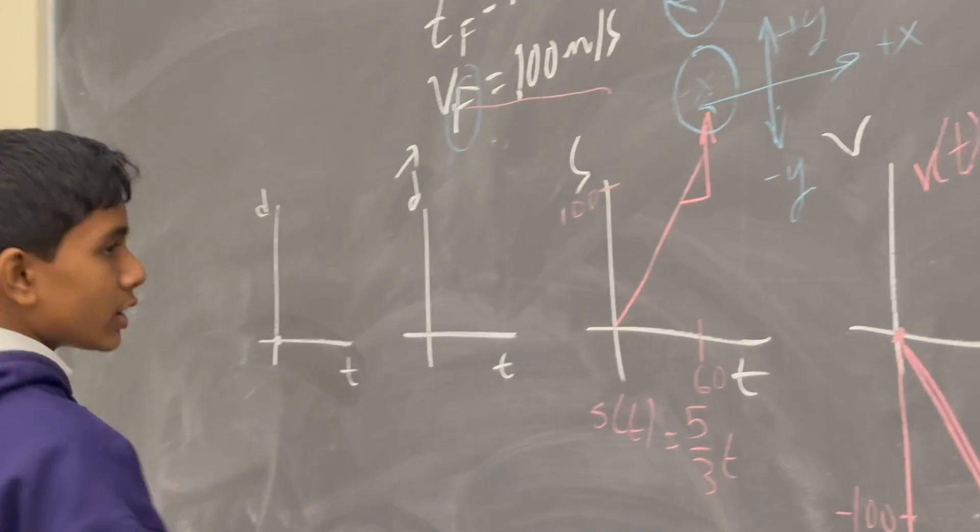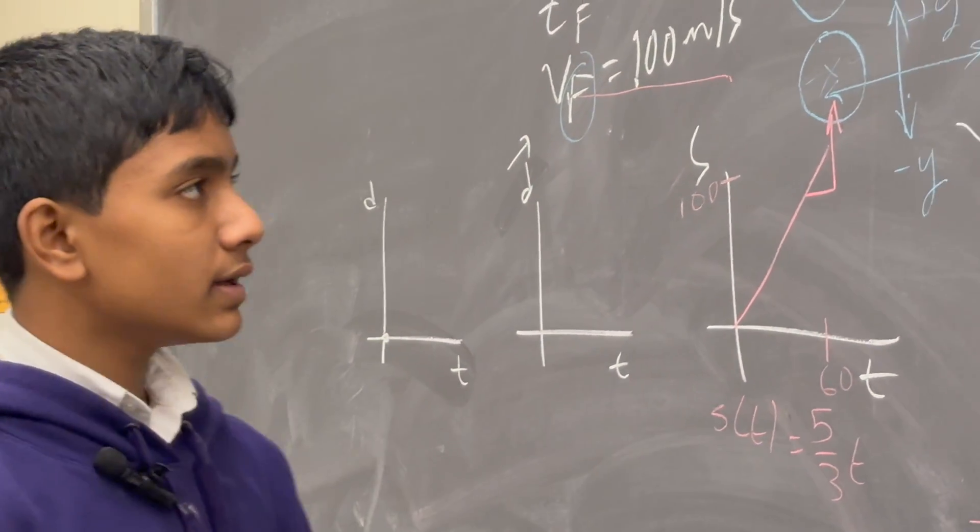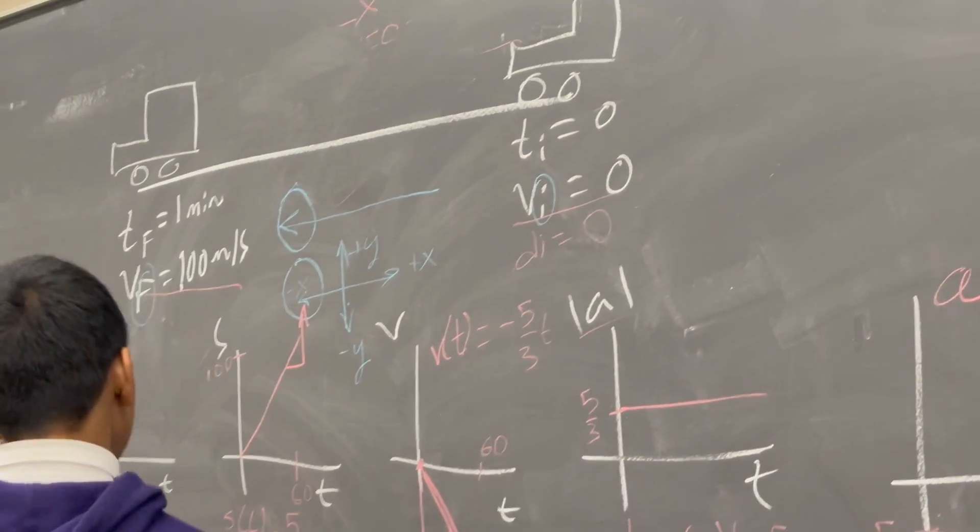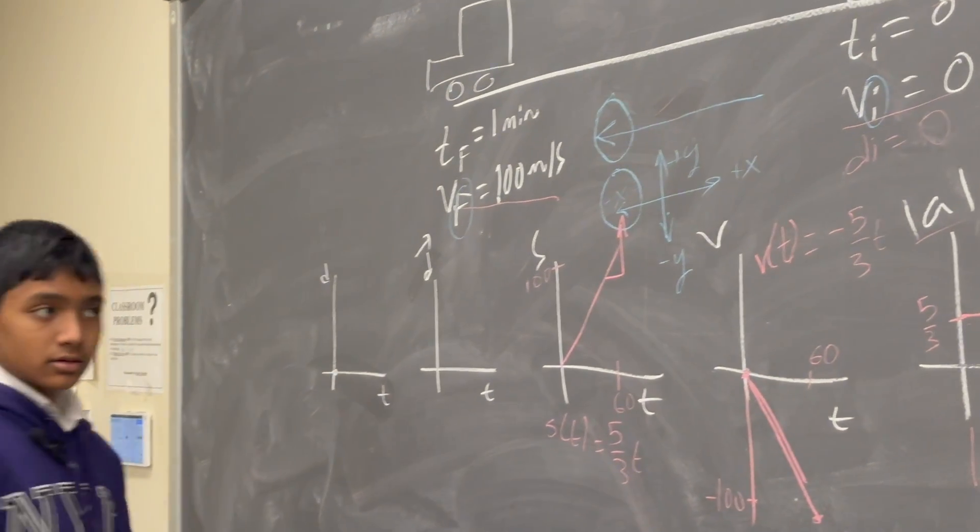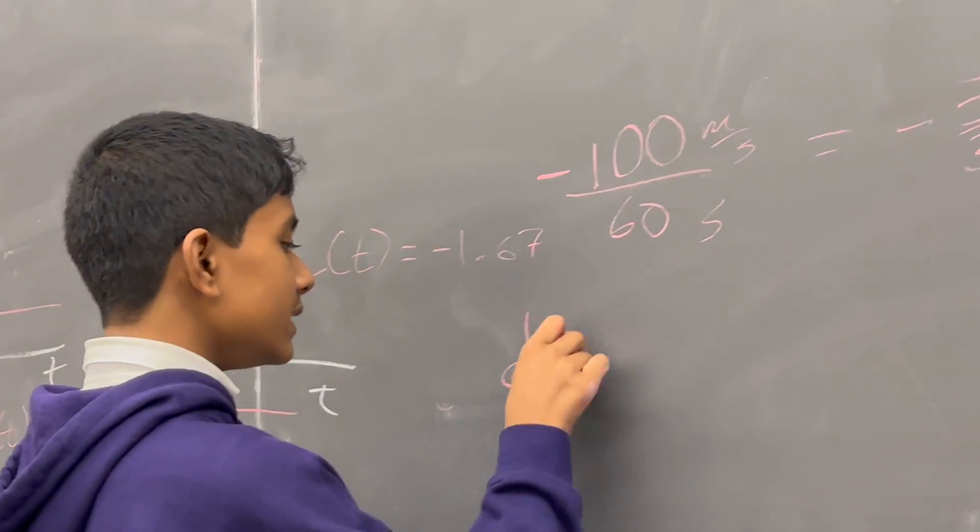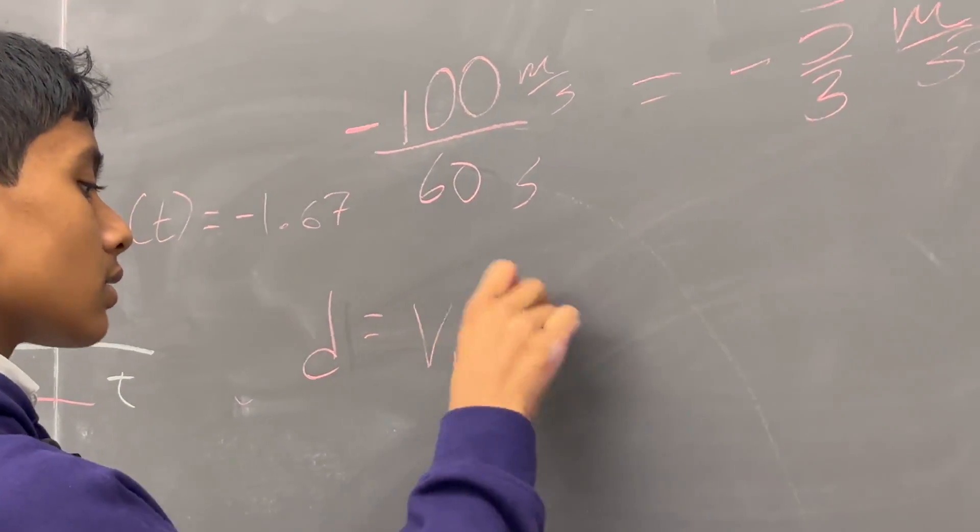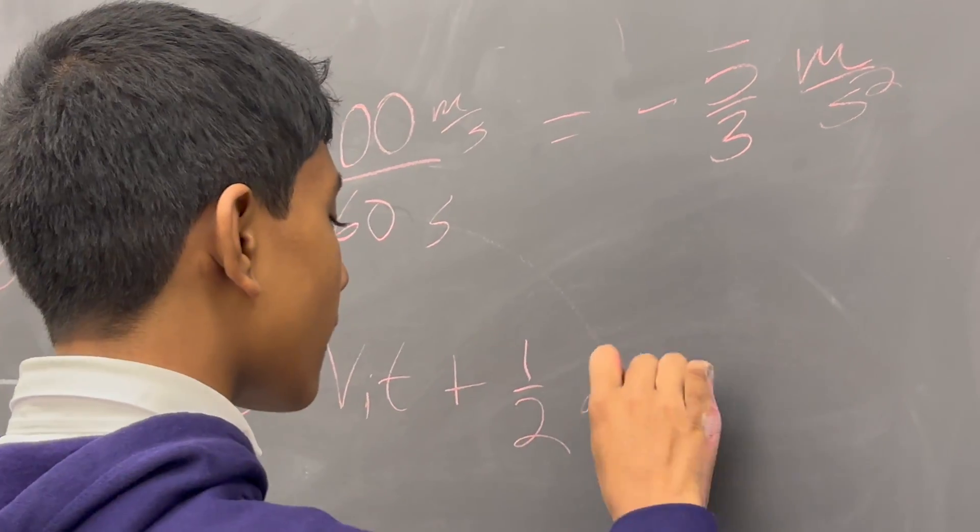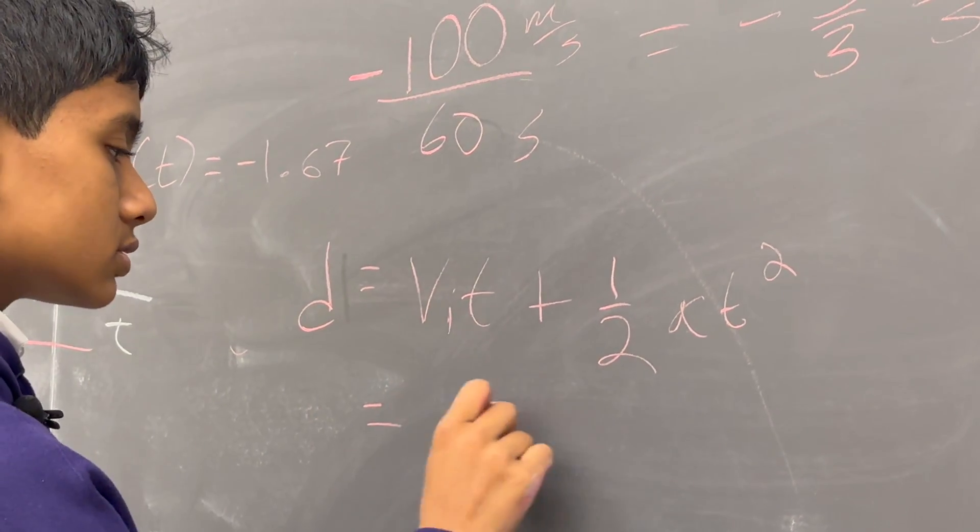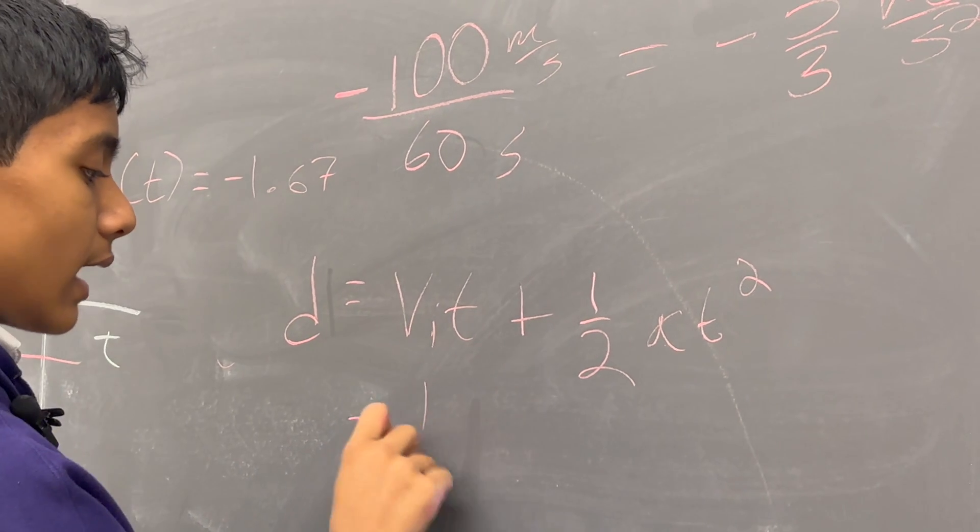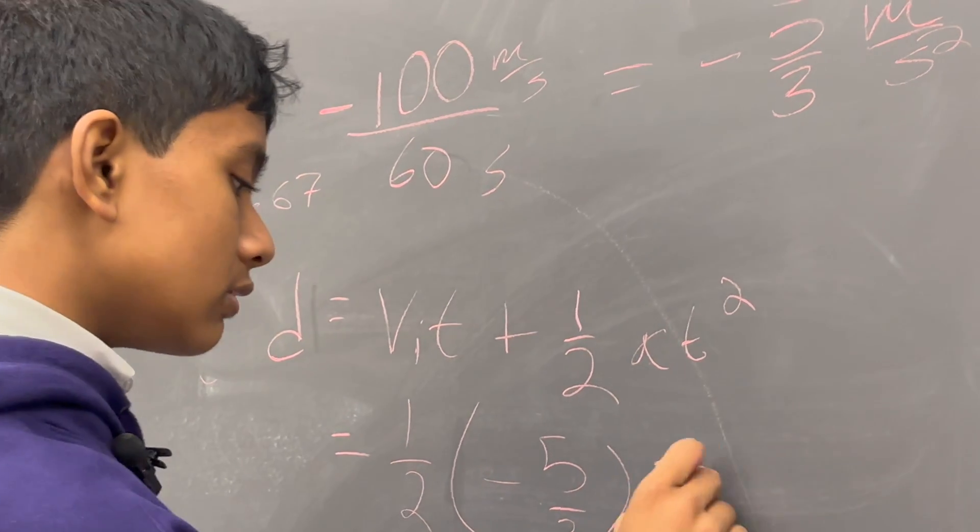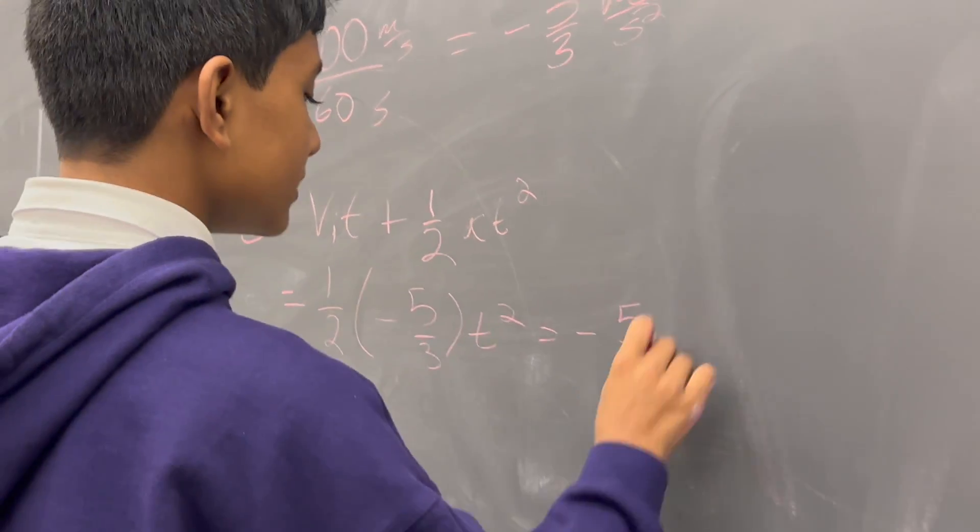And displacement over time is going to actually be a quadratic curve. So it looks like the initial distance or displacement is 0, but what's the final distance or displacement? Good question. So we're going to have to figure that out using the equation d equals v_i times t plus half a t squared. This is just going to be - v_i is 0 so we can just eliminate that term. Half a, which is minus 5 over 3t squared, which means our equation is minus 5 over 6t squared.